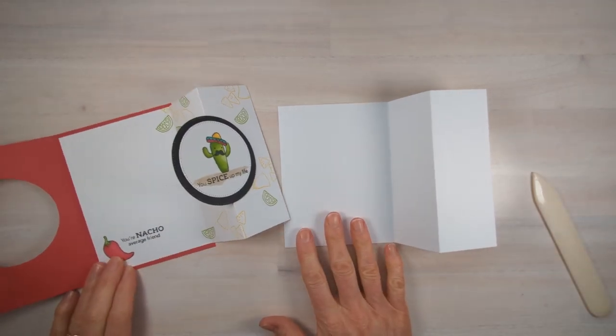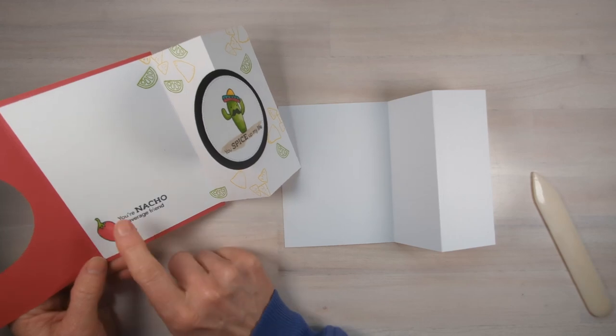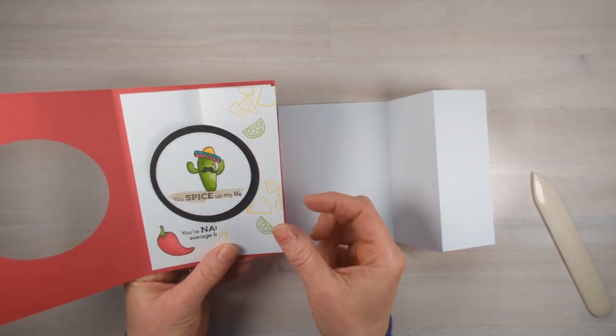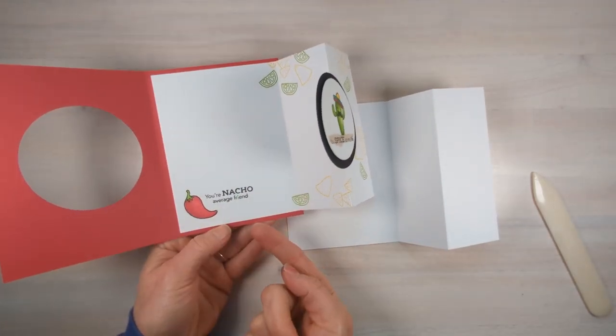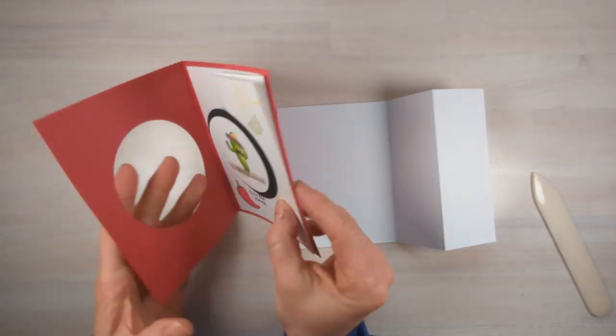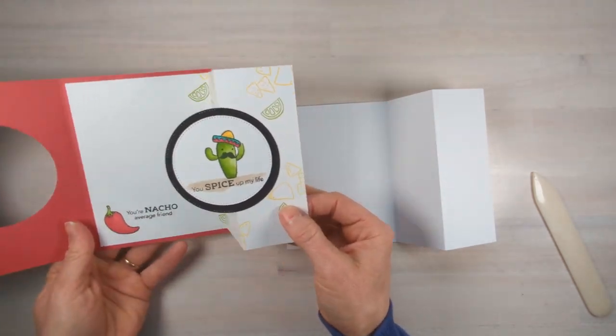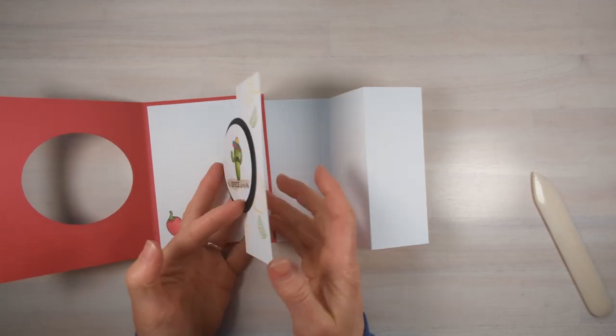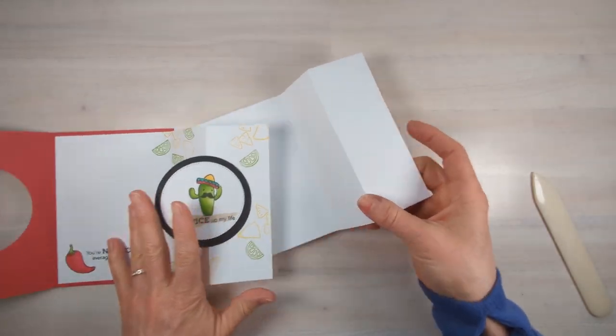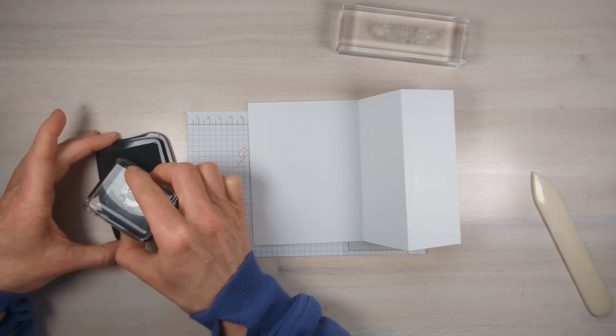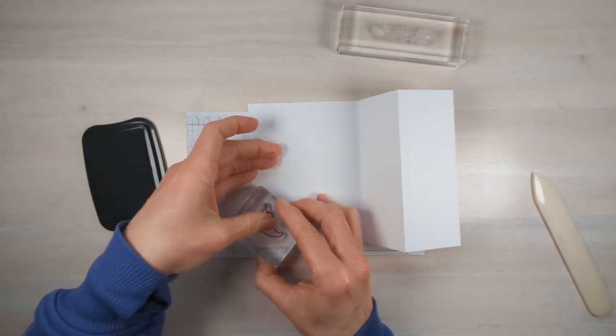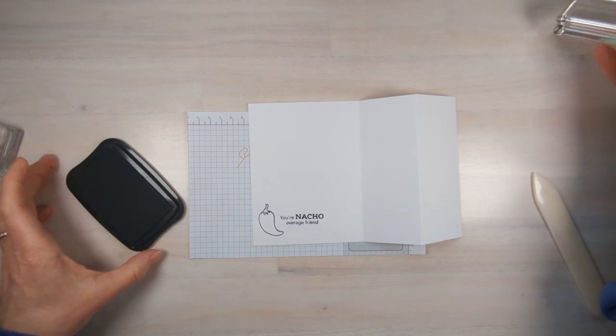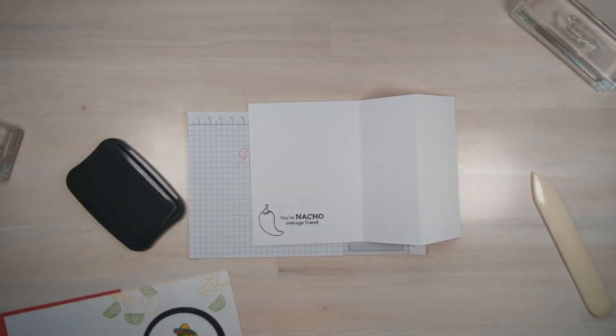When you are coloring with Stampin' Blends, they bleed through. So when you are coloring with them, you want to be able to layer it on top. This image I'm going to be able to color because I'm going to layer it with the card base on the back so you're not going to see it bleeding through. But all these other images, I'm just going to stamp and not color so that it doesn't bleed through on the back. Now just go grab some more images from that stamp set and just put one in the corner here. Stamp it in black and throw a sentiment on there.